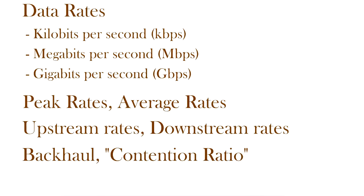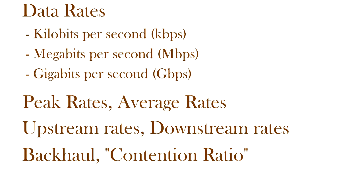In this video we've looked at data rates — kilobits per second, megabits per second, gigabits per second. We've looked at peak rates — the maximum rate you get — and average rates. We've looked at downstream (coming towards you) and upstream (going away from you). We've looked at backhaul and introduced the term contention ratio, which essentially determines the average rate you get during peak periods, for example in the evening. In the next video, I'll look at the NBN fibre service and use some of these terms to describe the performance we're likely to get from it.